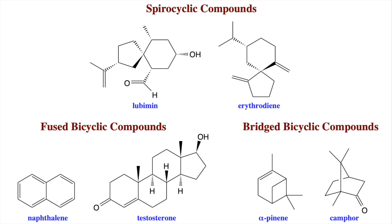For bridged bicyclic examples, we have alpha-pinene, which is produced by most conifers — most pine-type trees. It's the main component of turpentine and is also found in rosemary, contributing to its flavor. We also have camphor, which comes from the camphor laurel tree. Camphor has a very pungent, rather pleasing smell and is used in many medicinal ointments and rubs. Bicyclic compounds are really important — they're found all over nature, and many drug molecules are multi-cyclic compounds. The naming has a clear pattern and is pretty straightforward once you understand the system.